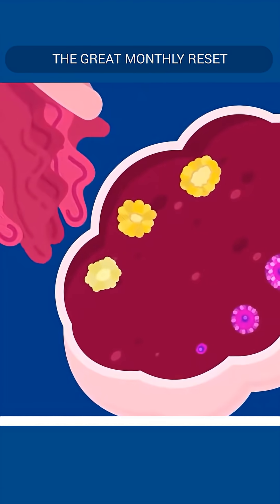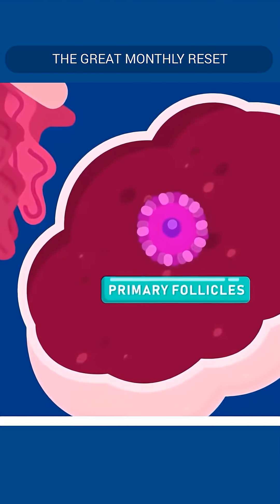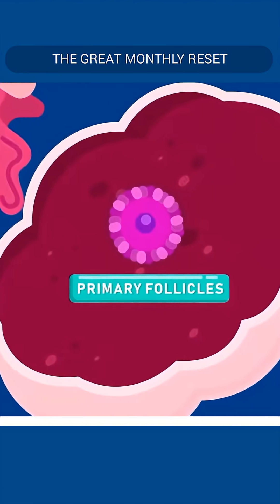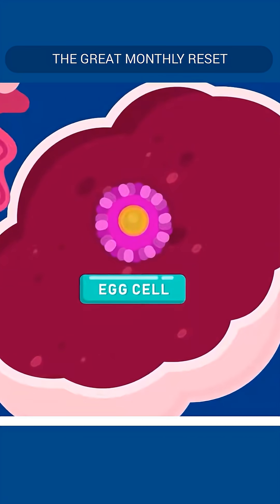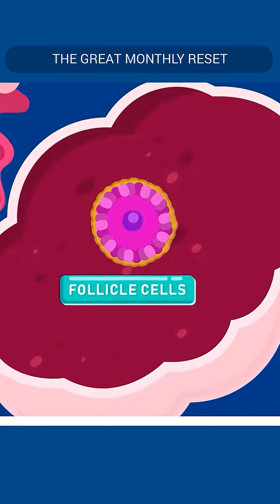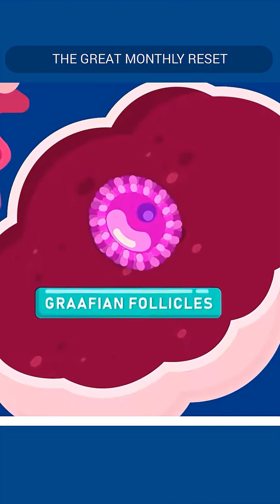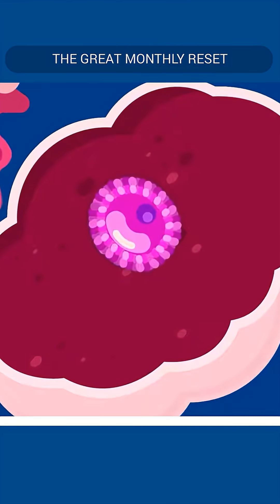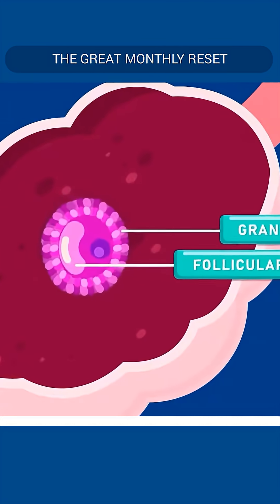Inside the ovary, there are many developing follicles. The young follicles are called primary follicles. Each primary follicle consists of a potential egg cell surrounded by a layer of smaller cells known as follicle cells. The primary follicle may grow to maturity, and a mature follicle is known as a Graafian follicle. The Graafian follicle contains an egg surrounded by follicle cells and a fluid-filled space.